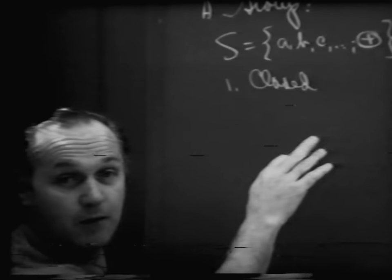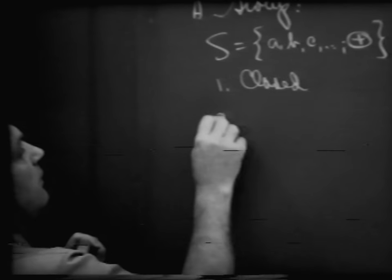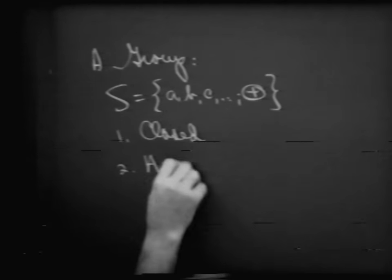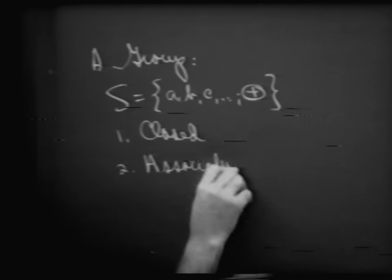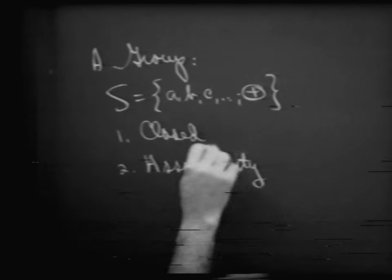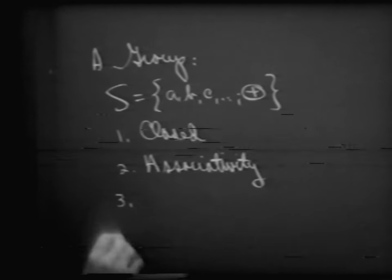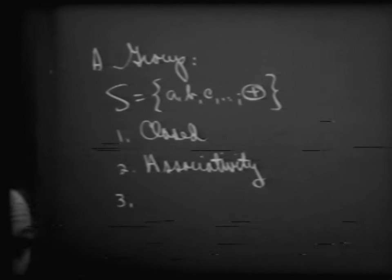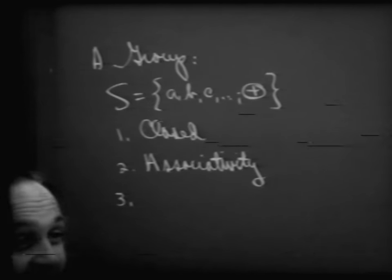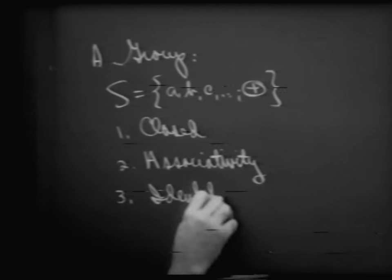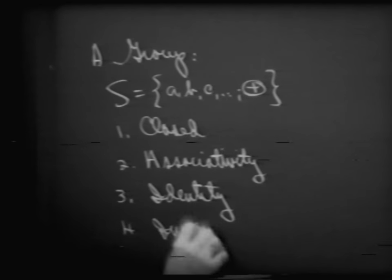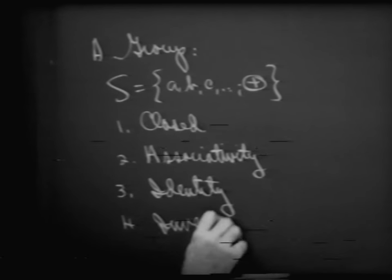We need closure with respect to that operation — let me call this circle plus. And then we would like to have a property of associativity. And then also we would like to have an identity element, and then, in fact, we would then like to have inverse elements over that set.